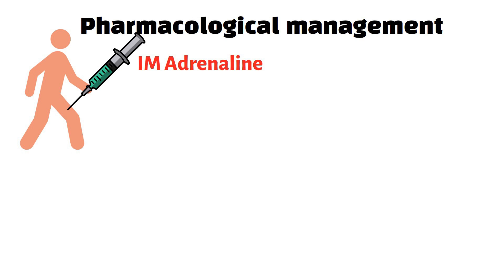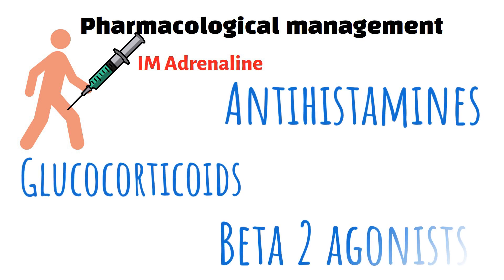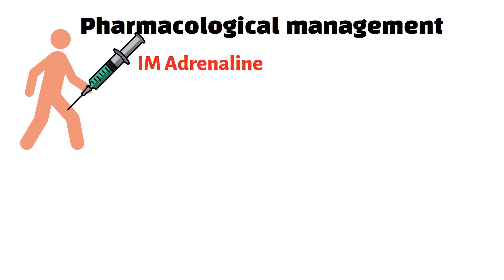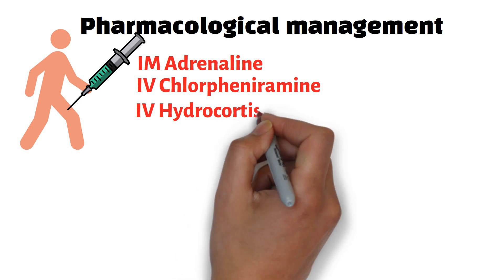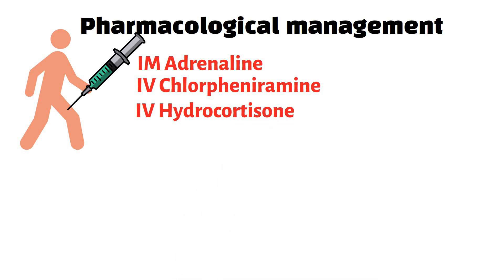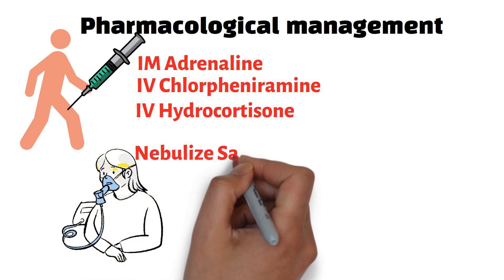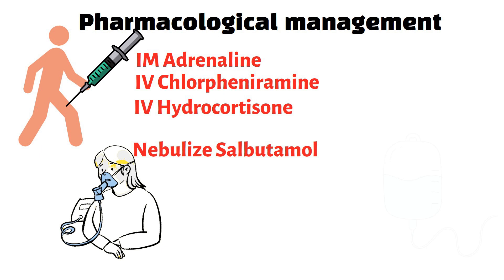The second line medications are antihistamines, glucocorticoids, and beta-2 agonists. Intravenous chlorpheniramine and intravenous hydrocortisone is given to these patients. If the patient is having wheezing, cough, and breathlessness, a selective beta-2 agonist like salbutamol is given via nebulization.